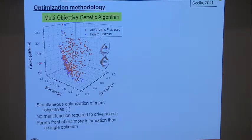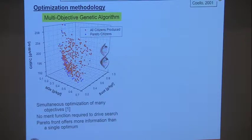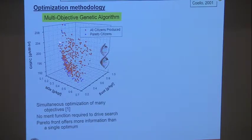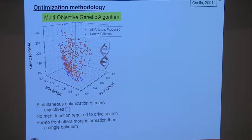If we apply this to engine simulation, we might be interested in optimizing the gross indicated specific fuel consumption, NOx, and soot. We'll run many different cases and spread them out in a 3D space. Some of them are what are called Pareto citizens, meaning no other solution lies to the left of them — they are, in that sense, optimum citizens.